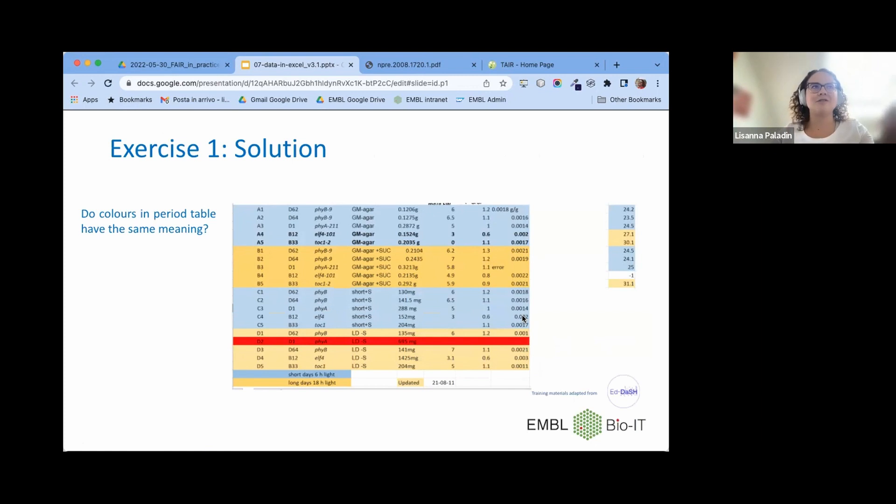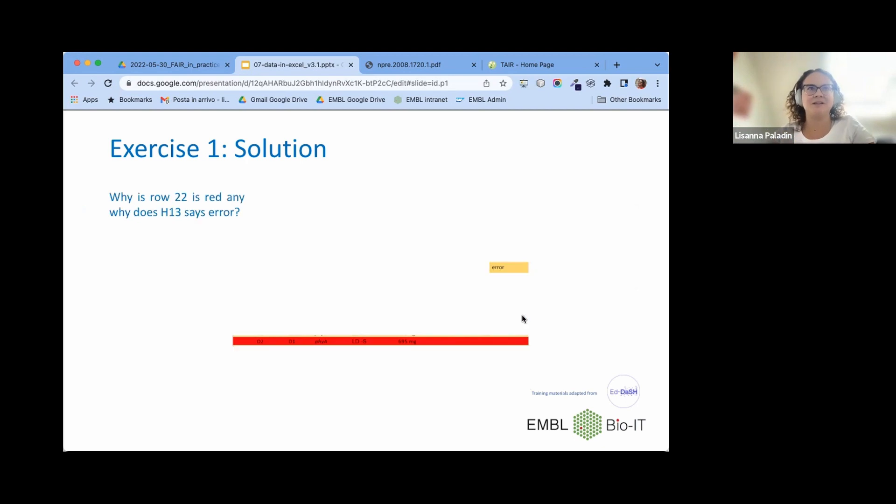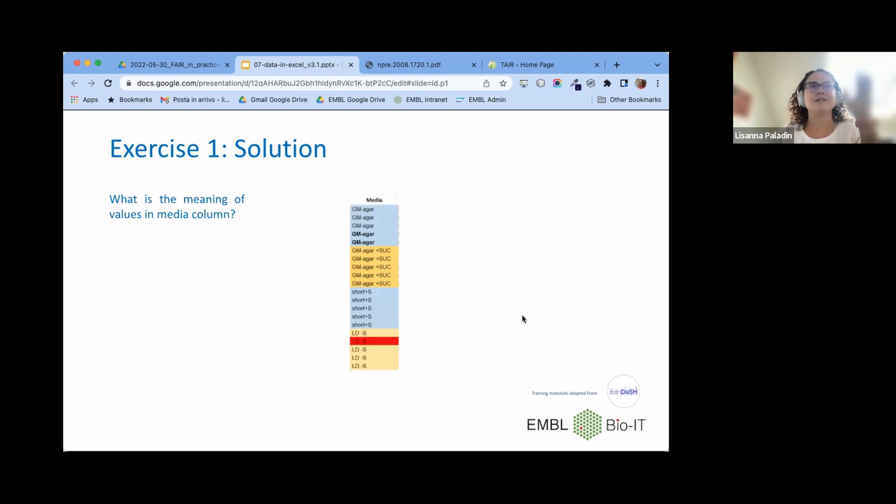First of all, we mentioned colors. Do we know the meaning of colors? Do the colors on one table have the same meaning as the colors on the other table? No idea. Why is one row red and the other says error? Is there a link between these two things or not? We don't know. What is the meaning of the values in the media column? No idea.